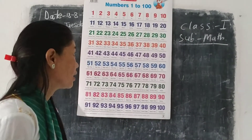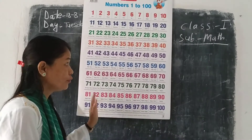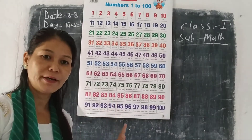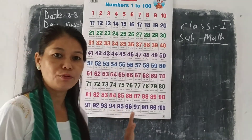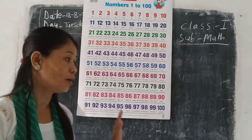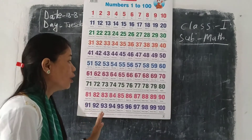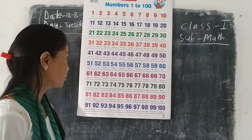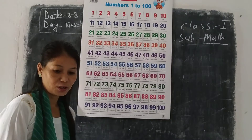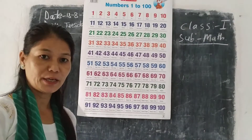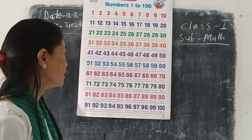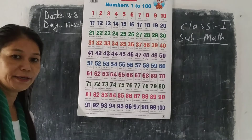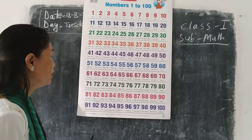I know you have done this chapter — 1 to 100, and write in words. Okay, numbers also you have done already. But again I will teach you. So look at the blackboard. Let's see 1 to 100. Do you know 1 to 100?